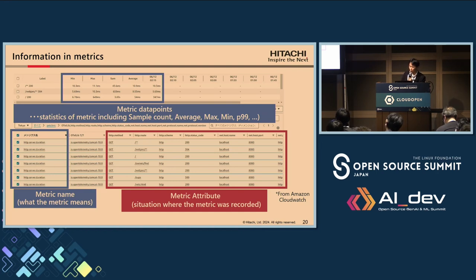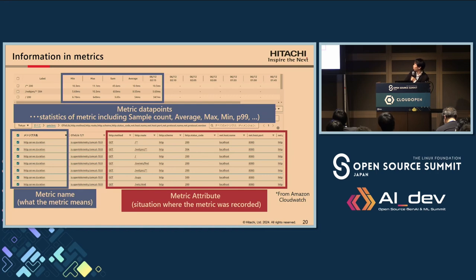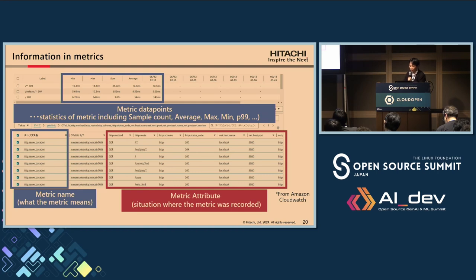The recording interval is set by the collector configuration — for example, if set to five minutes, metrics are recorded every five minutes and each data point has a value over that interval. Data points record values in histogram format. Telemetry management platforms like CloudWatch can use this histogram to provide statistics such as sample count, average, maximum, and minimum value. Attributes describe the conditions under which the metric was recorded — for example, HTTP server duration has attributes like status code, hostname, and request URL. Even if desired information is not directly available in metrics, it can often be obtained by processing metrics based on attributes.